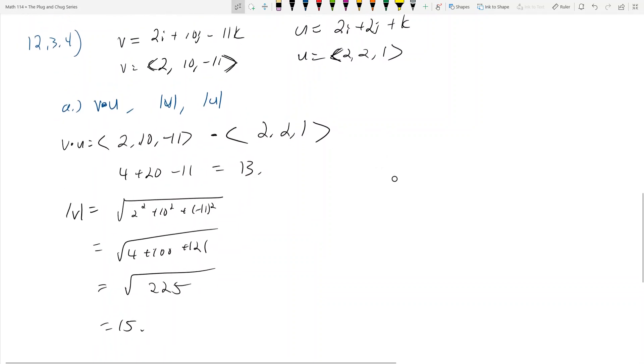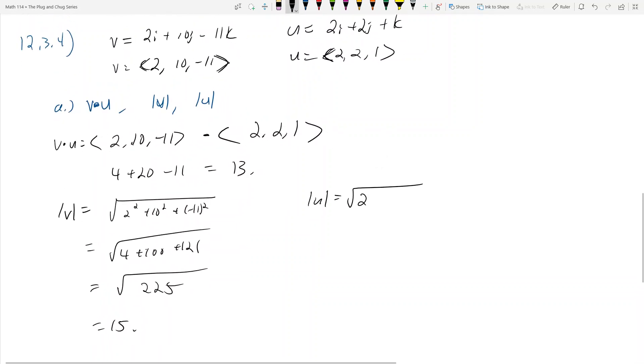And then the magnitude of u is the square root of 2 squared plus 2 squared plus 1 squared, because those are the components of u. And then this is equal to root 4 plus 4 plus 1, which is root 9. And so the magnitude of u is 3. So that's part A.